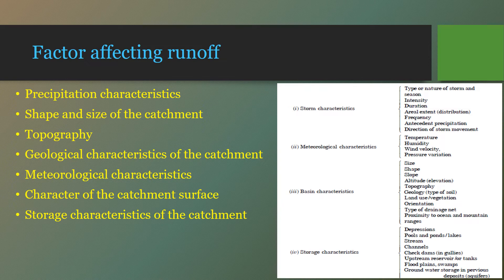Next topic: factors affecting runoff. There are many factors which affect the runoff, and they are classified into two categories: precipitation characteristics and catchment or basin characteristics. Under precipitation characteristics, we have: rainfall intensity, rainfall duration, and forms of precipitation.